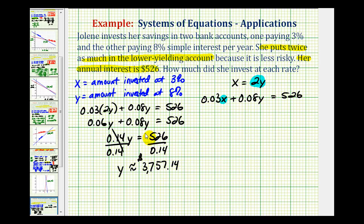Now we still have to find the amount of money invested at 3%. But since we know x is equal to 2y, we can just replace y with this amount here. So x is going to be equal to 2 times 3,757 dollars and 14 cents. This is an approximation because this is a rounded value. So this is going to give us 7,514 dollars and 28 cents.